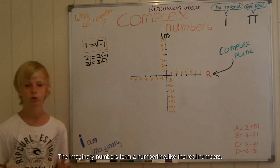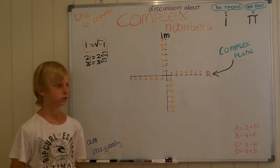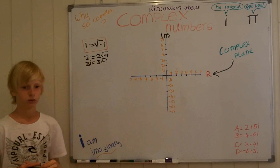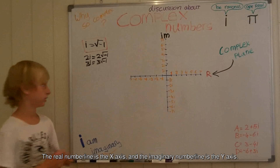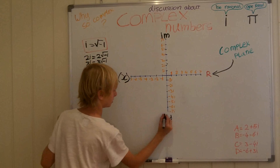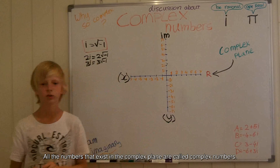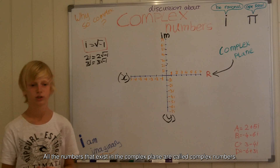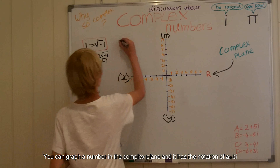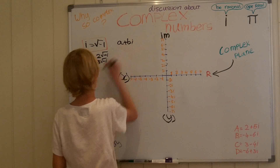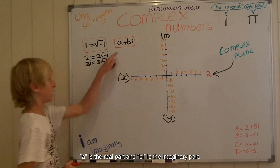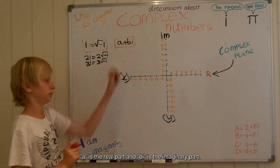The imaginary numbers form a number line like the real numbers. The two number lines form a two-dimensional plane called the complex plane. The real number line is the x-axis and the imaginary number line is the y-axis. All the numbers that exist in the complex plane are called complex numbers. You can graph a number in the complex plane, and it has the notation of a plus bi, where a is the real part and bi is the imaginary part.